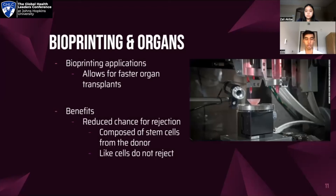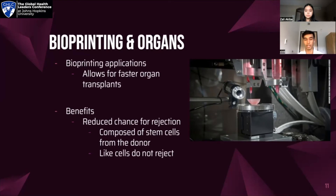With bioprinting in organ transplants, bioprinting allows for faster organ transplants — people are able to get off the waiting list much faster than through the traditional process, ultimately saving lives. It also advances the global mission of health equity, as many places do not have equitable access to adequate organ transplant resources through organizations like UNOS that exist in the United States. In addition, bioprinted organs have a reduced chance of rejection. With traditional transplants, organs come from deceased or living donors. With bioprinting, organs can be made from stem cells directly from the recipient, meaning similar cells, and therefore a far lower risk of rejection.